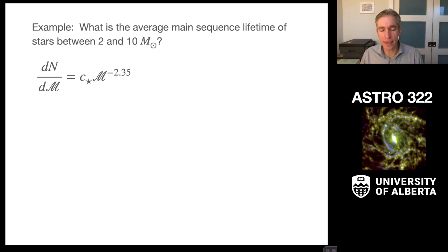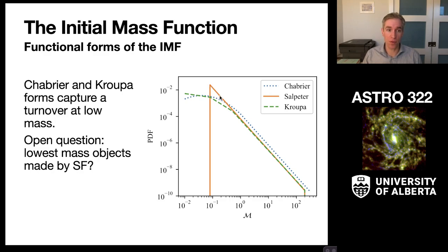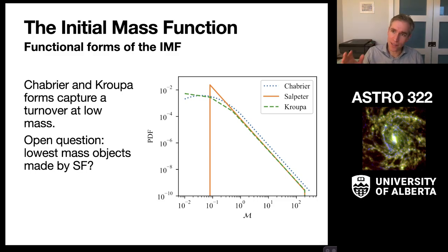The Salpeter IMF is wonderful because it's a simple functional form, but there are other functional forms that are more accurate. This compares three different functional forms. Salpeter is the original IMF shape but the least accurate, because around 0.2 solar masses it predicts way too many objects. This 0.1–0.2 solar mass range and drop-off doesn't match what's actually observed. It turns out there are lots of objects with masses close to stars — these are brown dwarfs.